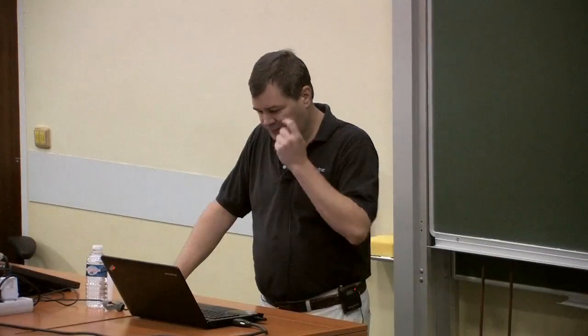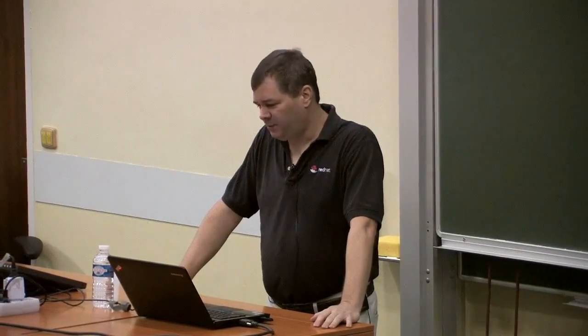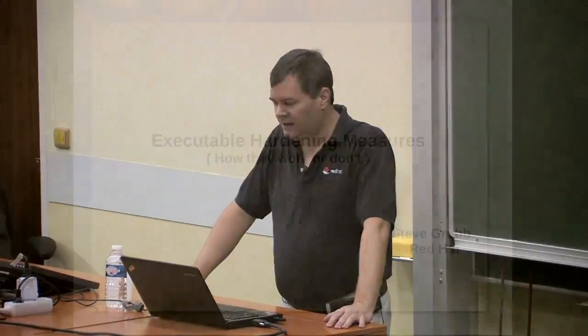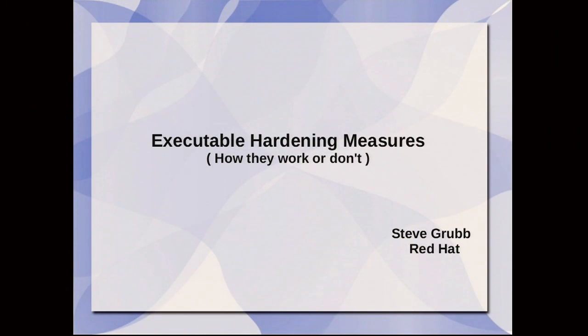I work on the RHEL security team. A lot of the work I do is around FIPS 140 certifications, government standards, and common criteria. As part of the work in common criteria, we have to take a look at software assurance measures and study those and explain some of the mitigation that we have in place. The RHEL 6 common criteria did include claims on exploit prevention through GCC and glibc features.